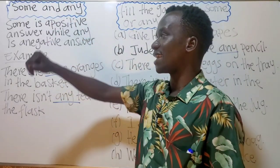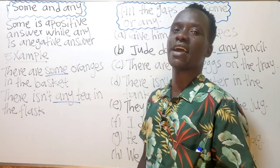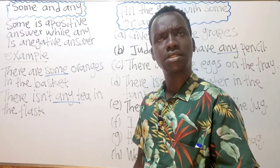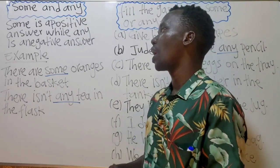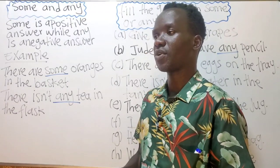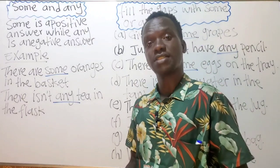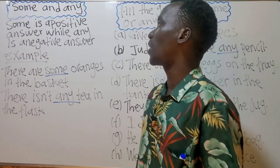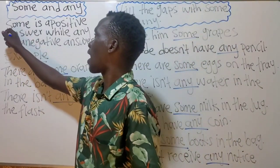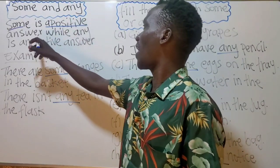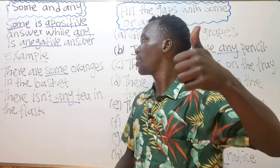So, 'some' and 'any' — that is what we shall look at right now. The use of 'some' and 'any.' I believe you have ever heard someone saying 'Do you have some water?' or 'Do you have any pain?' Today I will help you understand it, because English has formulas — you cannot just speak English anyhow or you'll find that you're speaking broken English. 'Some' is a positive answer, while 'any' is a negative answer.